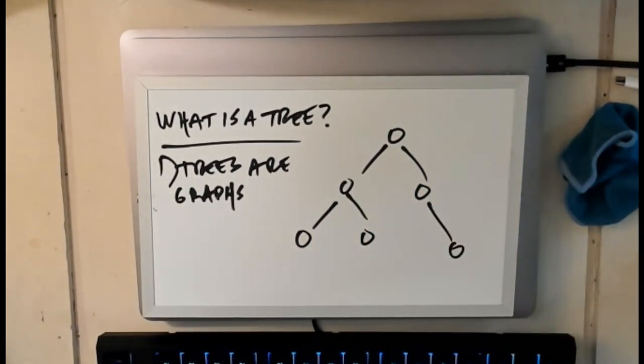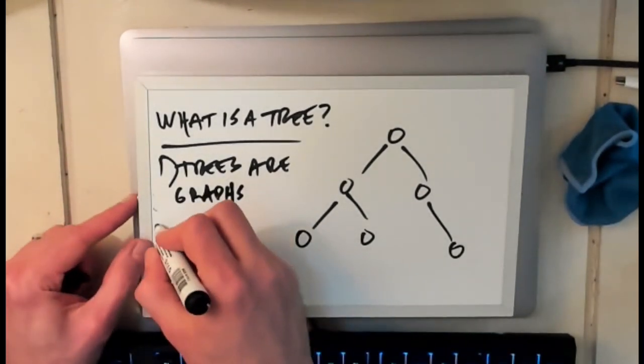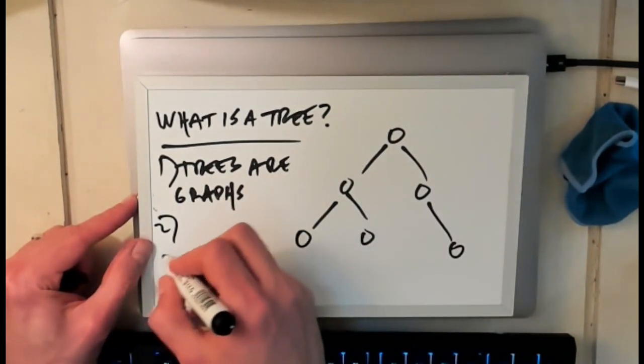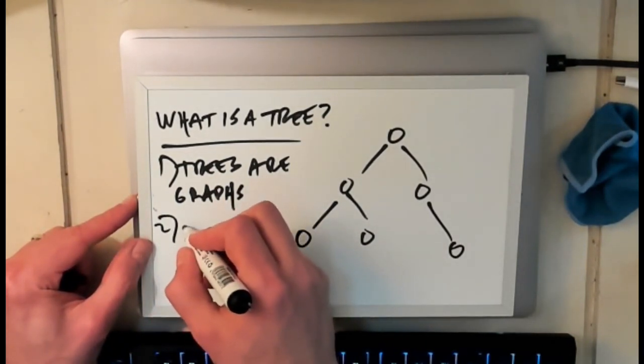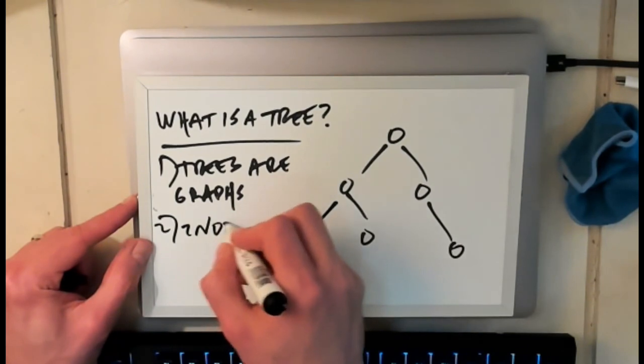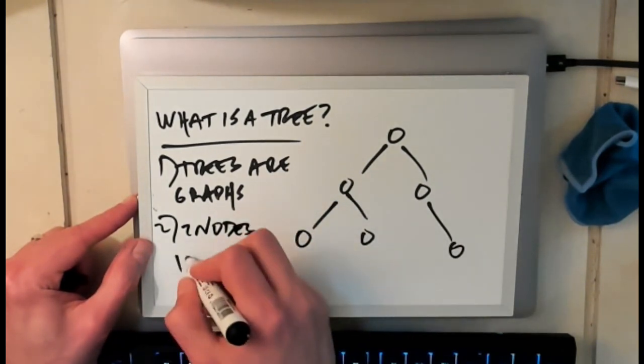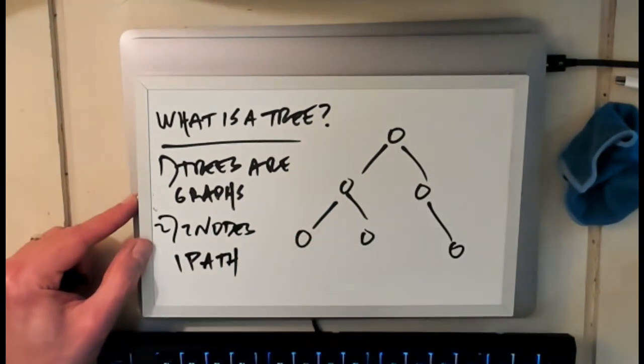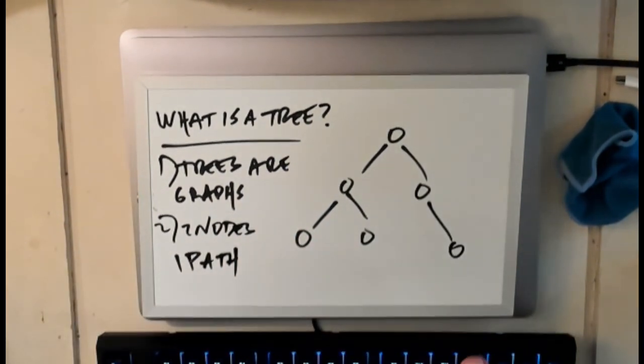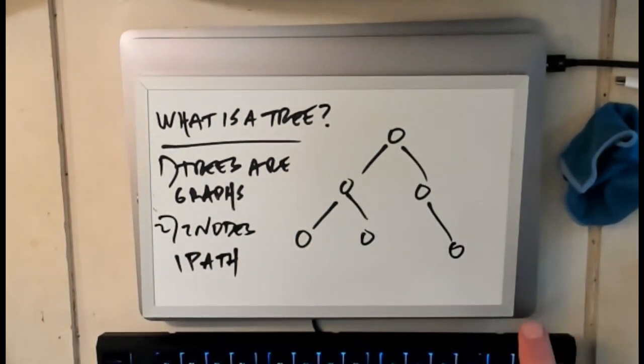What distinguishes a tree from other types of graphs is sort of interesting. So in a tree, there is exactly one path from every node to every other node. So two nodes, one path. If I pick any two nodes in my tree, there will be exactly one path connecting them. First of all, there will be a path connecting them. And second, there will be exactly one path connecting them.